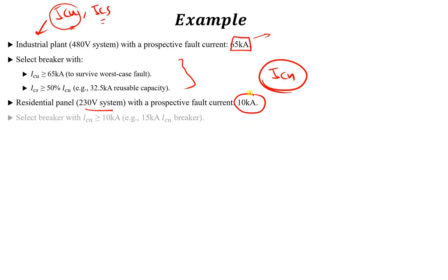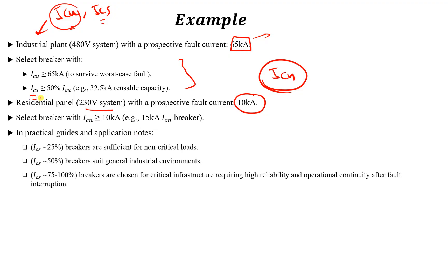In practical guides and application notes, the typical ICS selection is: 25% of ICU for non-critical loads where a breaker failure is acceptable, 50% for standard industrial environments, and 75% to 100% for critical infrastructure requiring high reliability. These are the three important definitions — ICS, ICU, and ICN — and their applications. Hope you understand them well.